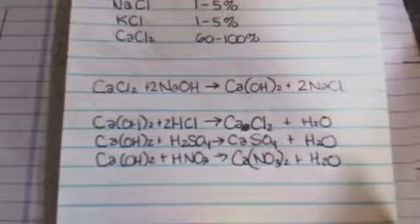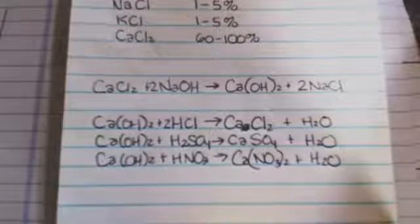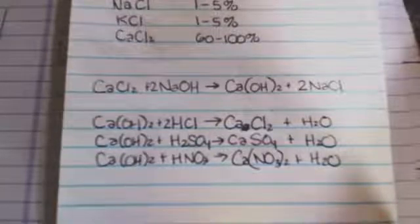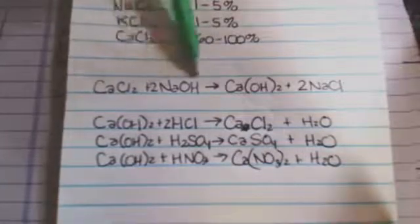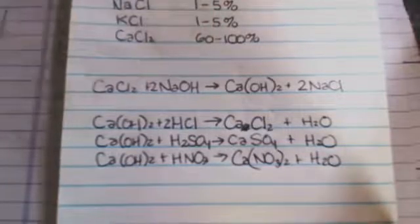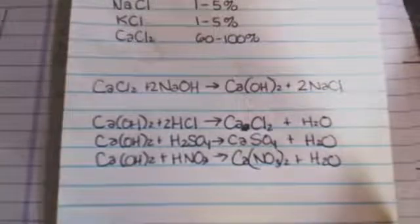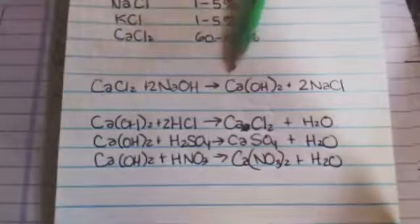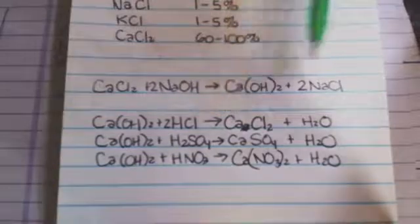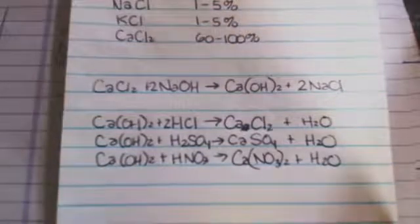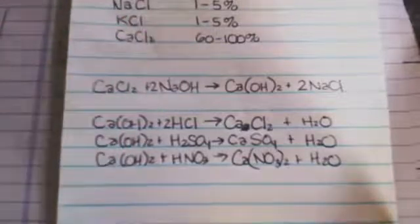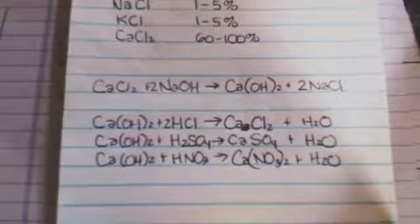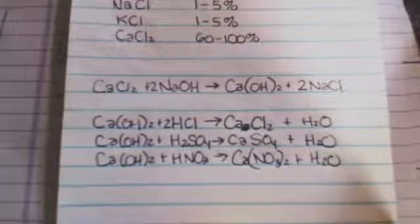Another thing that calcium chloride DampRid is good for is it's a source of calcium for calcium salts. So if you take your calcium chloride and you mix it with some sodium hydroxide—remember we make chromium hydroxide this way—what will happen is the calcium hydroxide precipitates out and the sodium chloride stays in solution. Then you can mix that with any acid you want to make your salt.